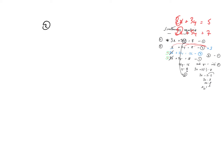Let's look at example 2. We have 6x minus 3y is equal to 9 — that's equation 1 — and 5x plus y is equal to 11 — that's equation 2. I'm going to work with the y's, so I want to get that y up to 3y, which means I must multiply equation 2 by 3.